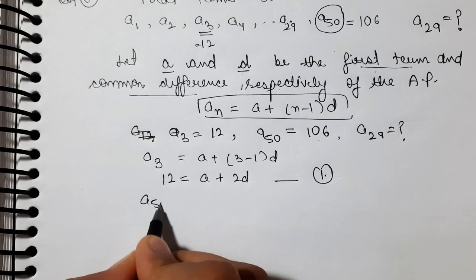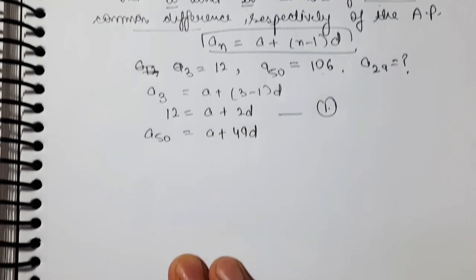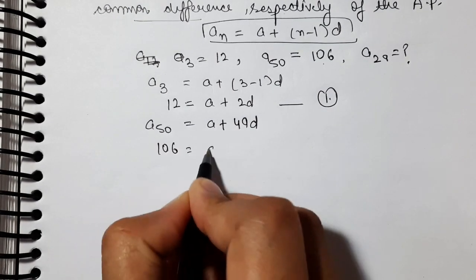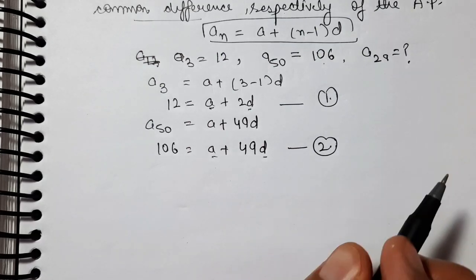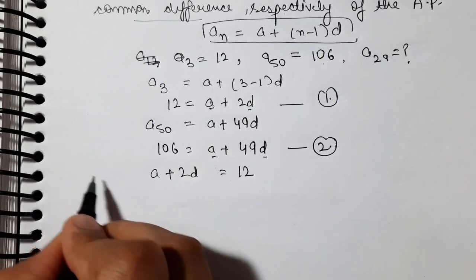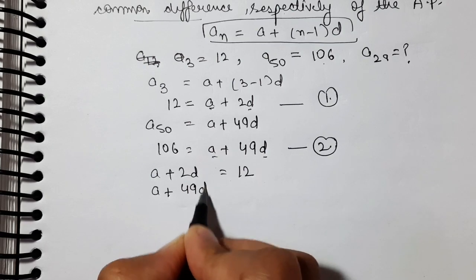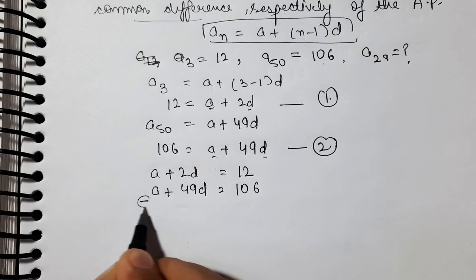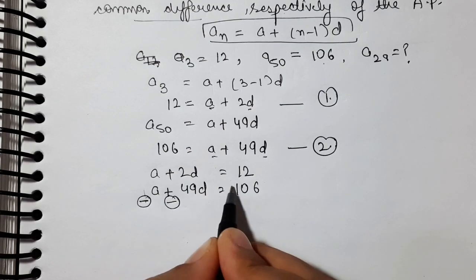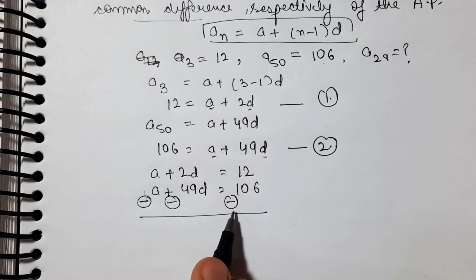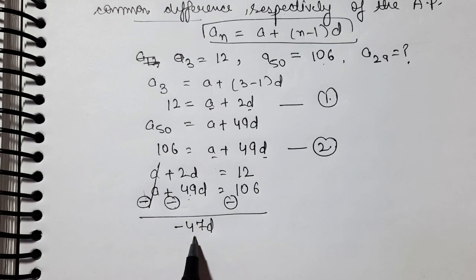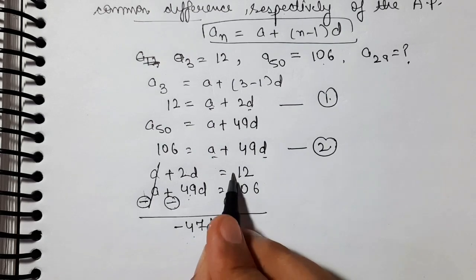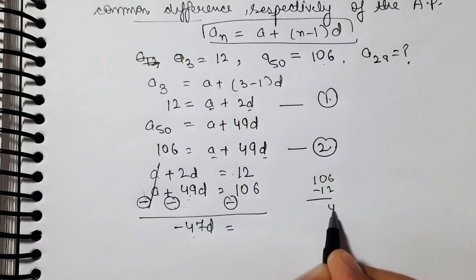Now we have two equations and two variables. We will use the elimination method. Solving equations 1 and 2: A + 2D = 12, and A + 49D = 106. Changing signs for elimination — A minus A is 0, and 2D minus 49D gives minus 47D. On the right side, 12 minus 106 is minus 94. So minus 47D = minus 94.